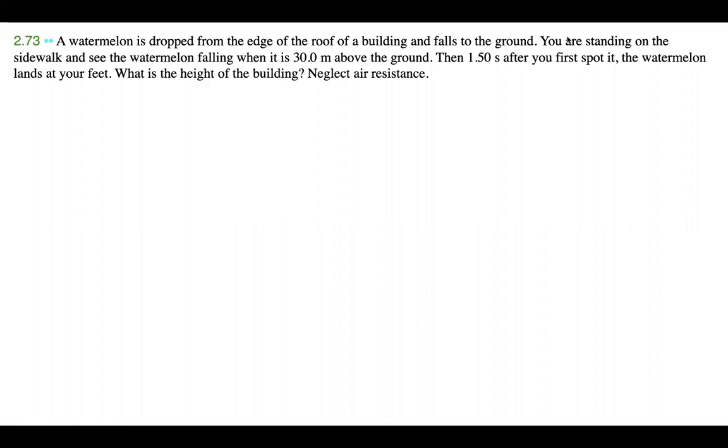A watermelon is dropped from the edge of the roof of a building and falls to the ground. You are standing on the sidewalk and see the watermelon falling when it is 30 meters above the ground.